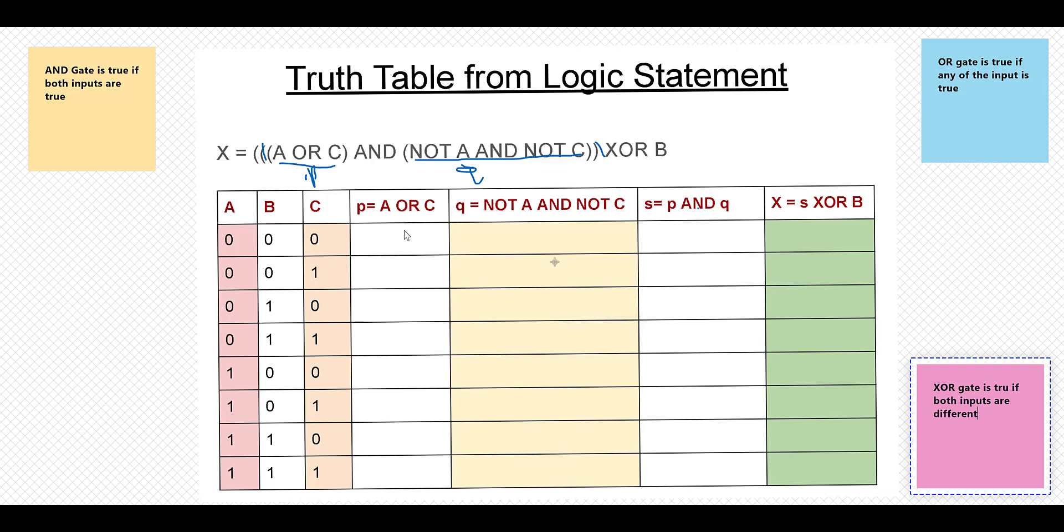So this is OR gate and it will only be true if any of the input is true. So here inputs are not true.